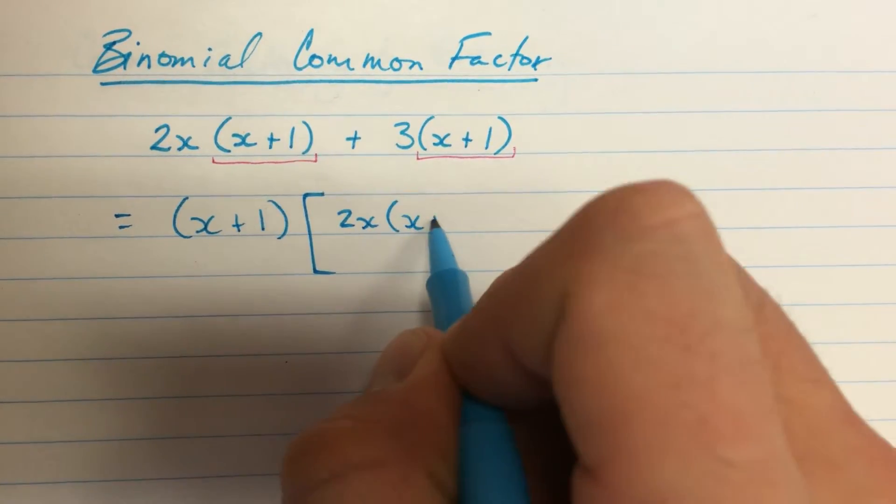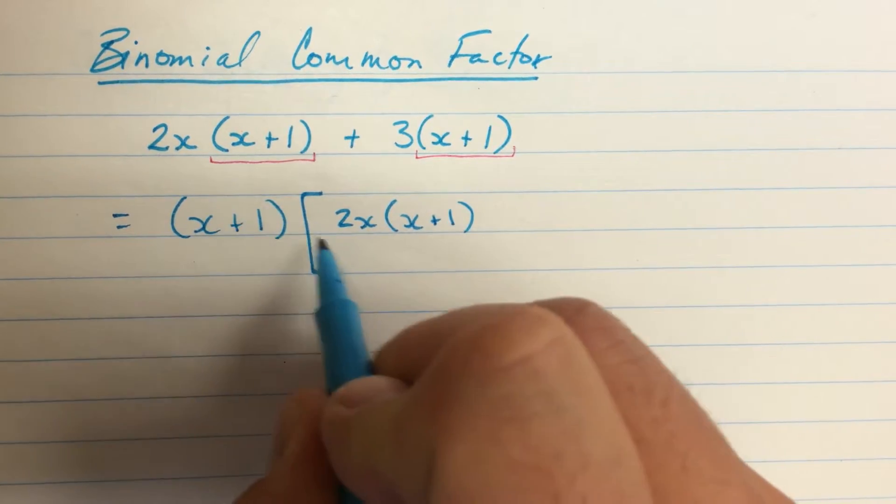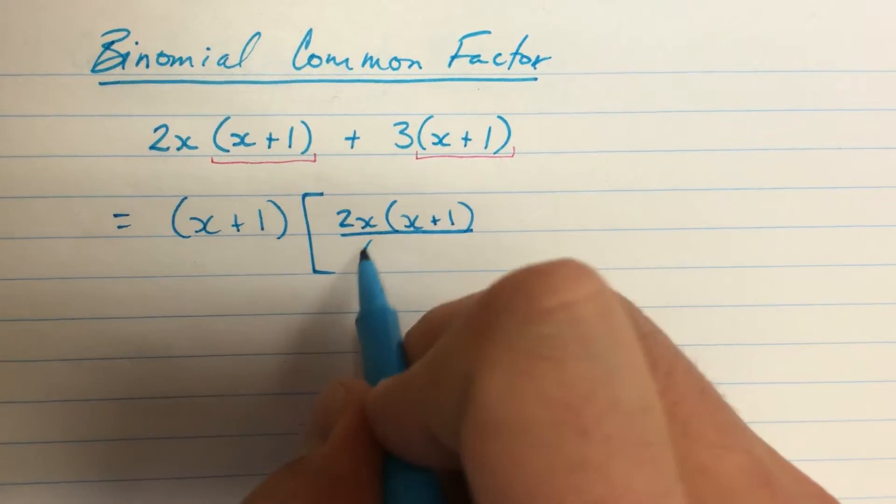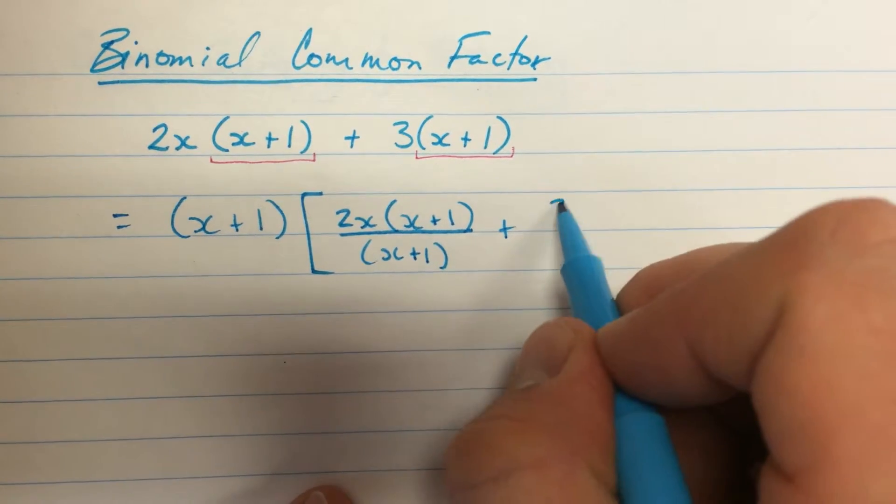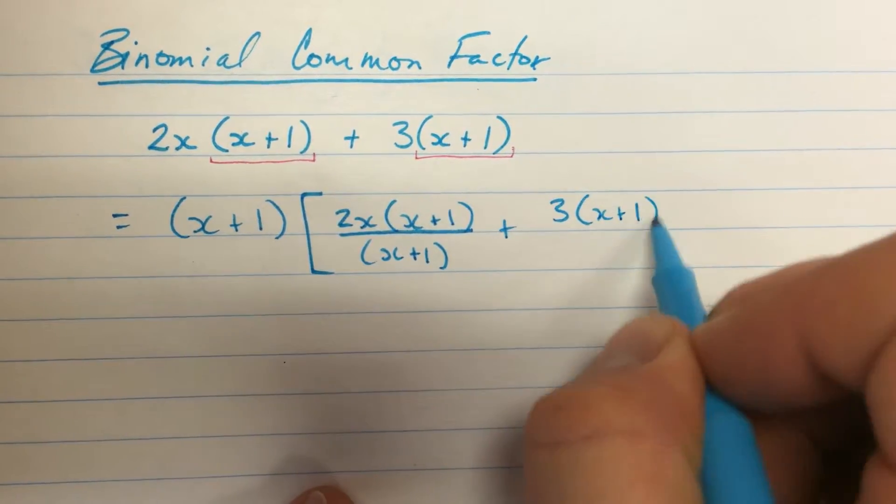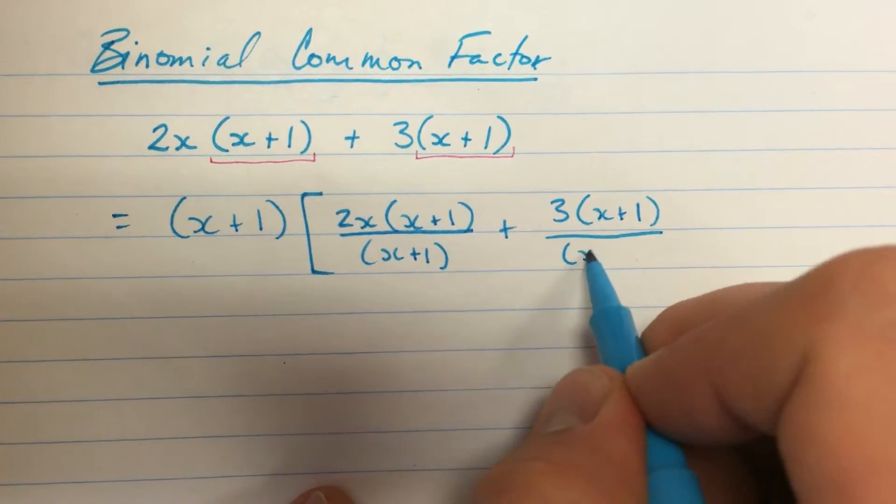2x times x plus 1. I'm going to divide that term by x plus 1. And then I have 3 times x plus 1. And I'll divide that term by x plus 1.